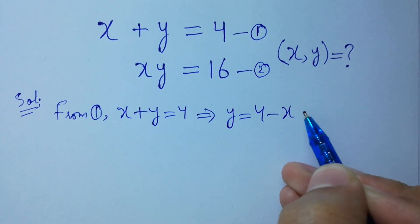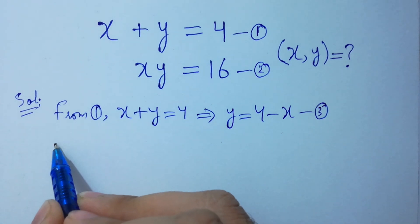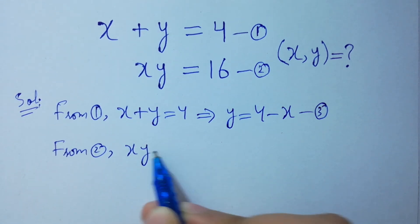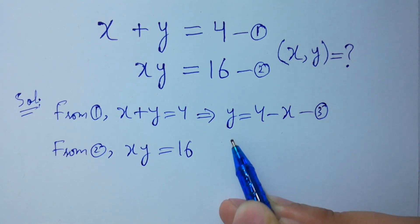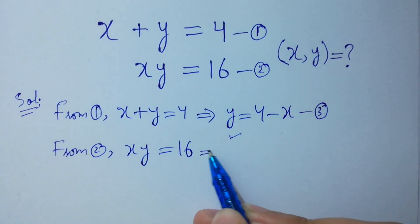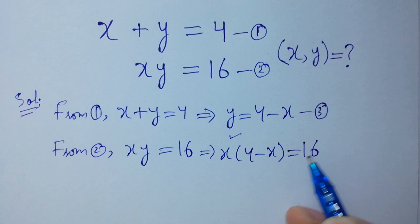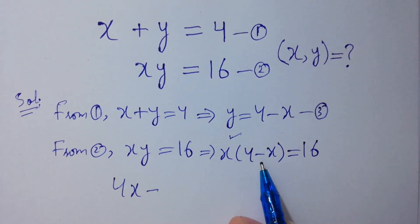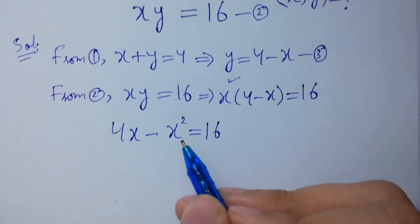From the first equation, x plus y equal to 4, then y equal to 4 minus x. Let this be the third equation. From the second equation, xy equal to 16. As y equal to 4 minus x, we put it here and get x times (4 minus x) equal to 16. So we have 4x minus x squared equal to 16.